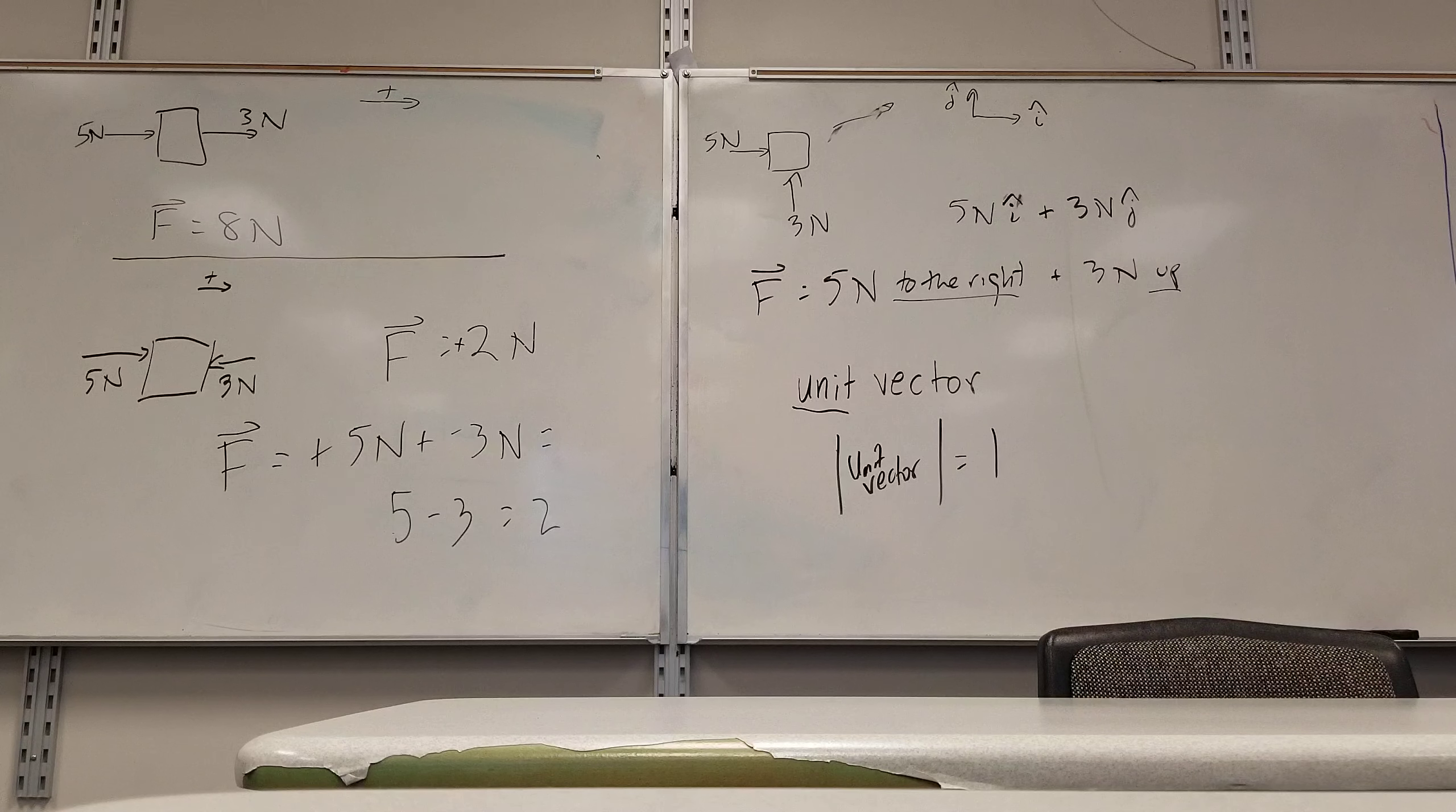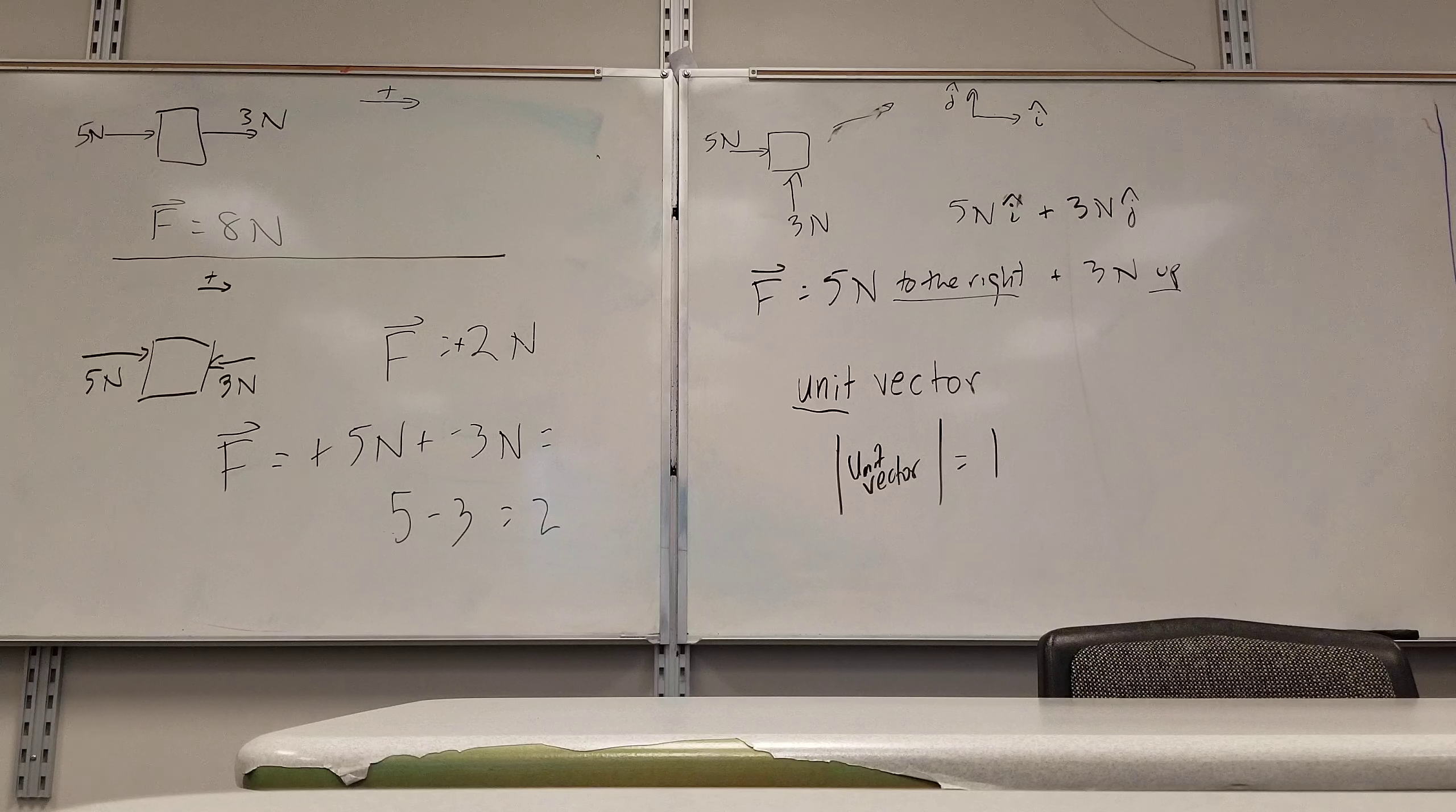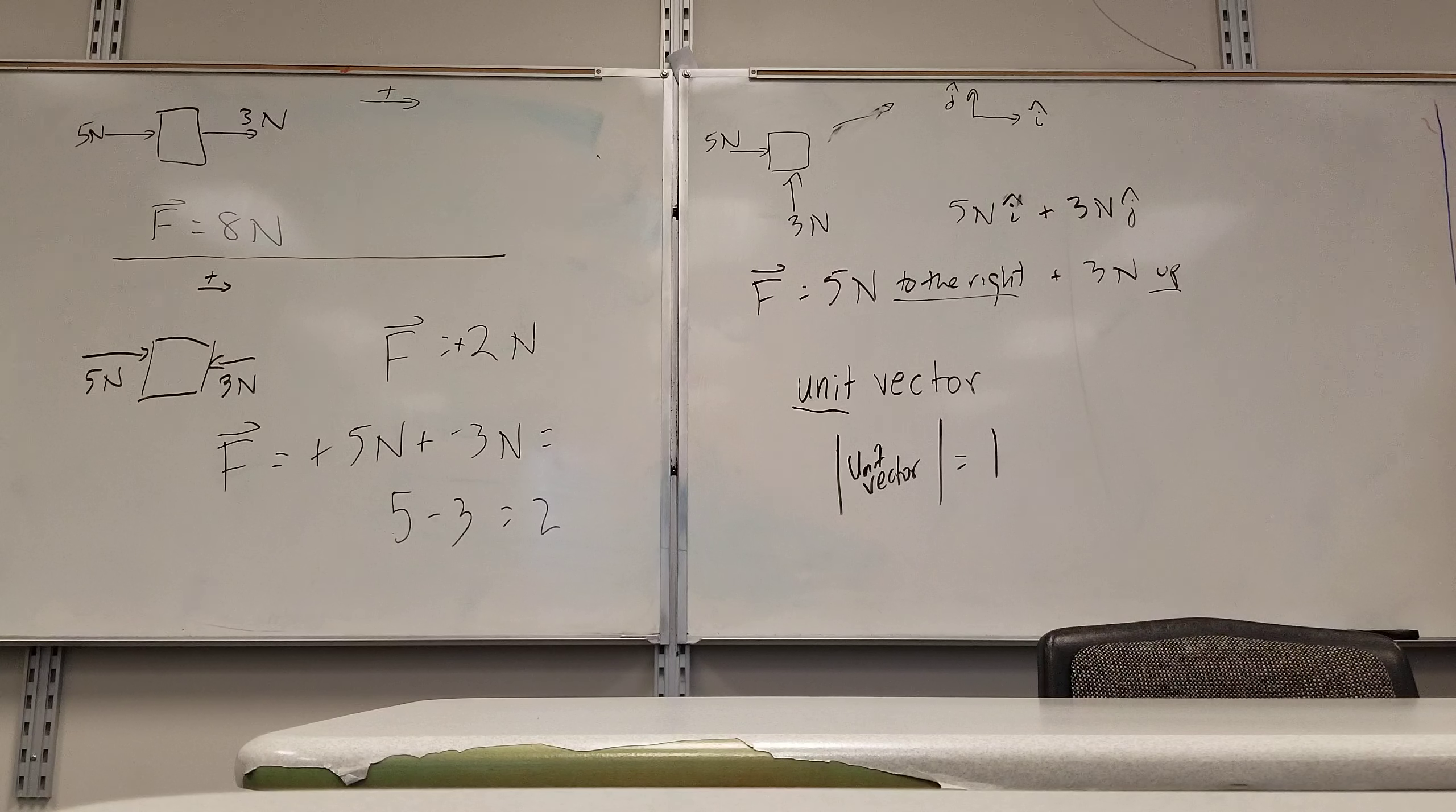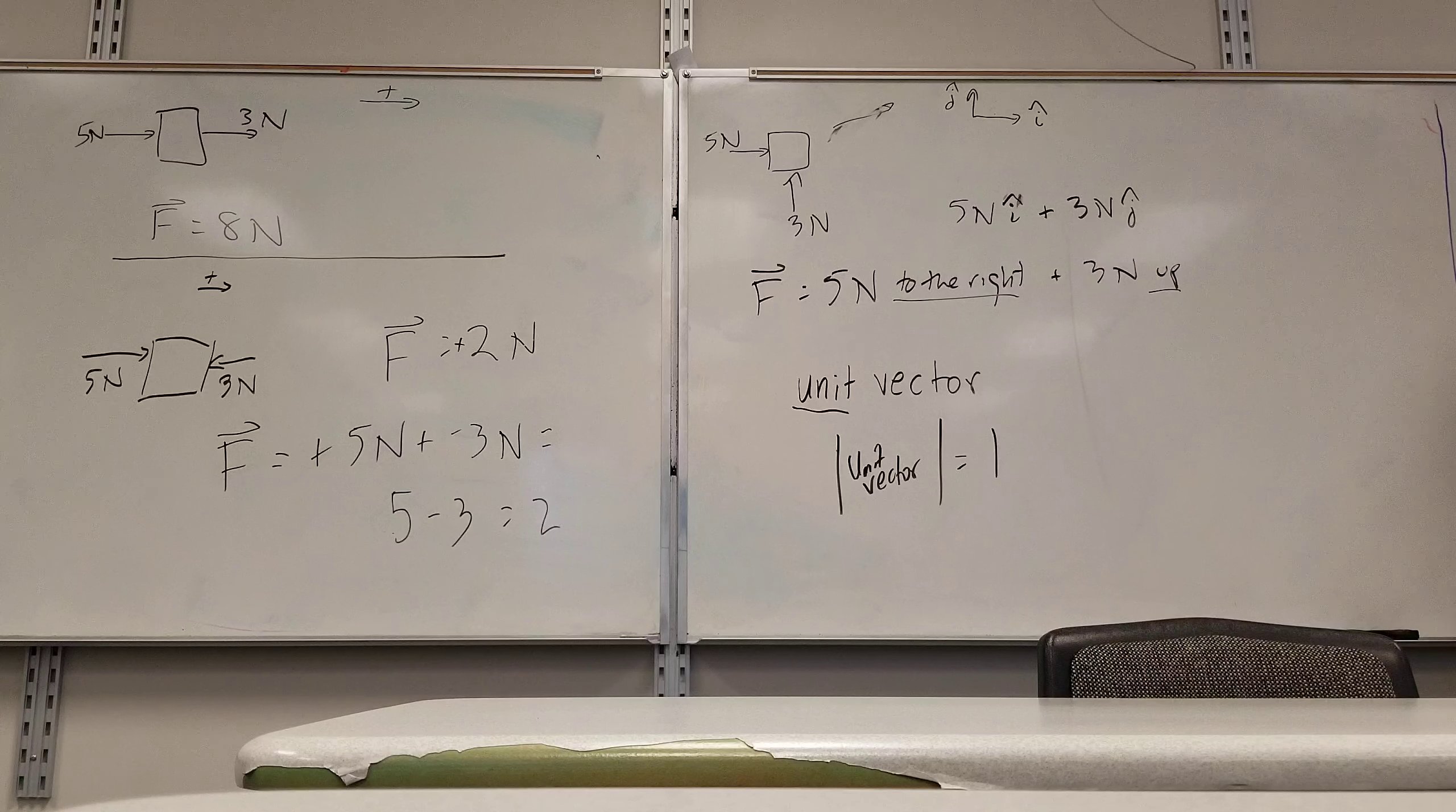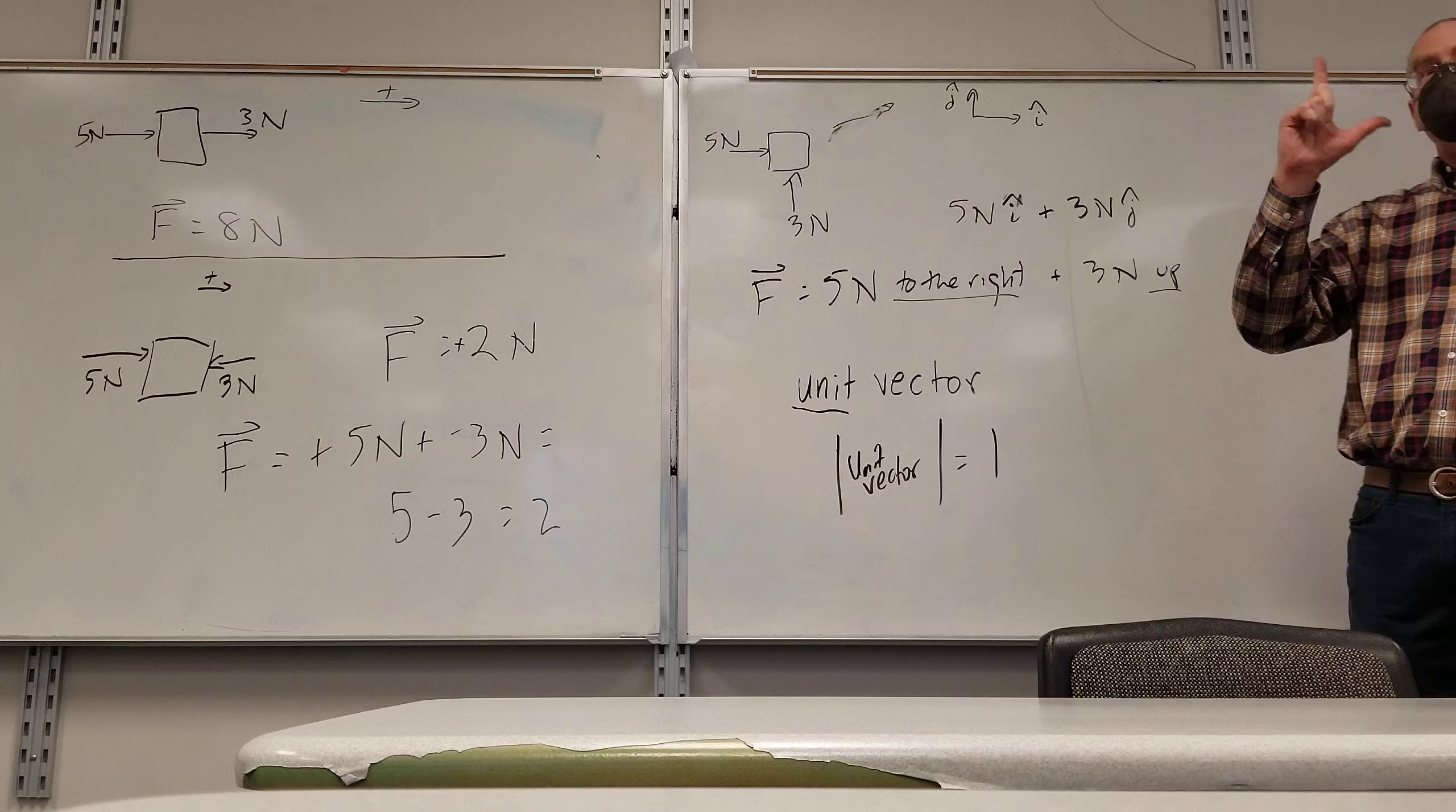Oh, okay. But anyone want to guess what vector name I would give for the third dimension? I think somebody just said it very quietly. K hat? Yep, K hat. So I, J, and K.